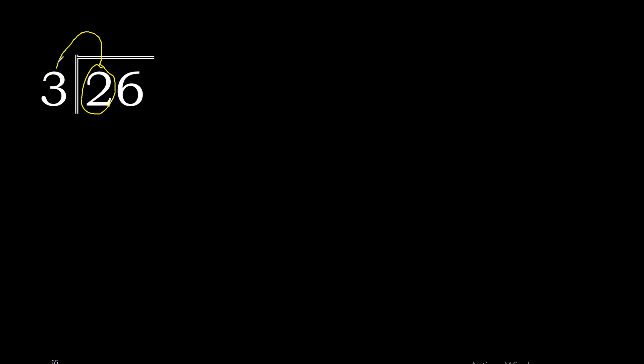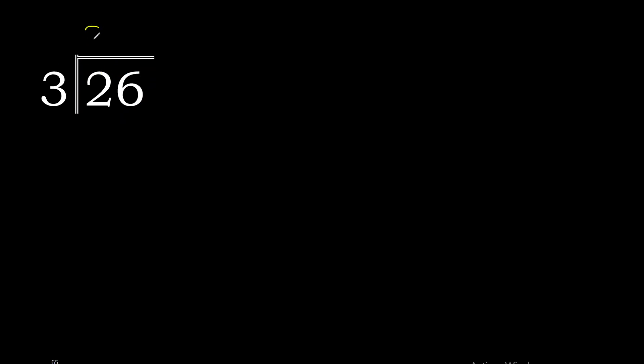26 divided by 3. 2 is less than 3, therefore join. 26 is not less than 3, therefore we proceed. 3 multiplied by 9 is 27, which is excessive.